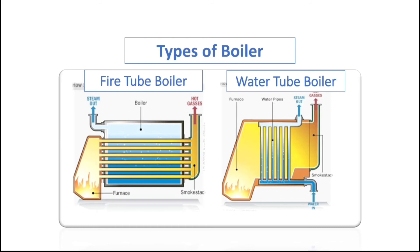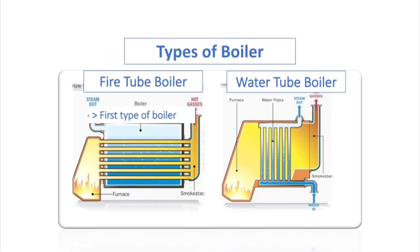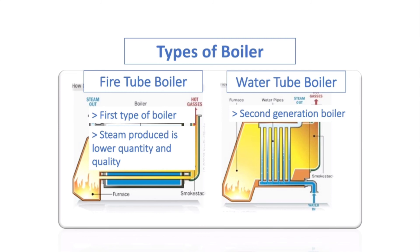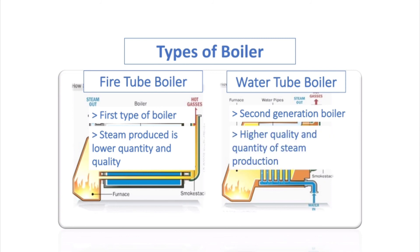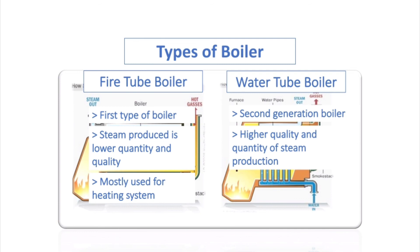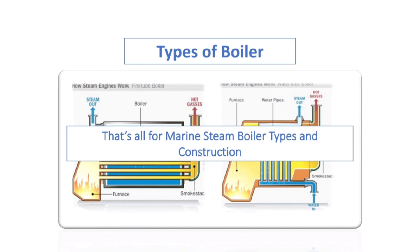Here is a quick comparison between fire tube and water tube boilers in terms of construction and purpose. The fire tube boiler is the first type of steam boiler, and the water tube boiler's construction design is based on the fire tube boiler. Fire tube boilers are commonly used on board ships where steam production is low, with steam rates up to 12,000 kg per hour and pressures up to 18 kg/cm², while water tube boilers are designed for higher demand, with steam production rates of 4,500 to 120,000 kg per hour at very high pressure. Fire tube boilers are mostly used on board ships and in steam heating systems, while water tube boilers are mostly used in steam turbine operation. And that's all for marine steam boiler types and construction.